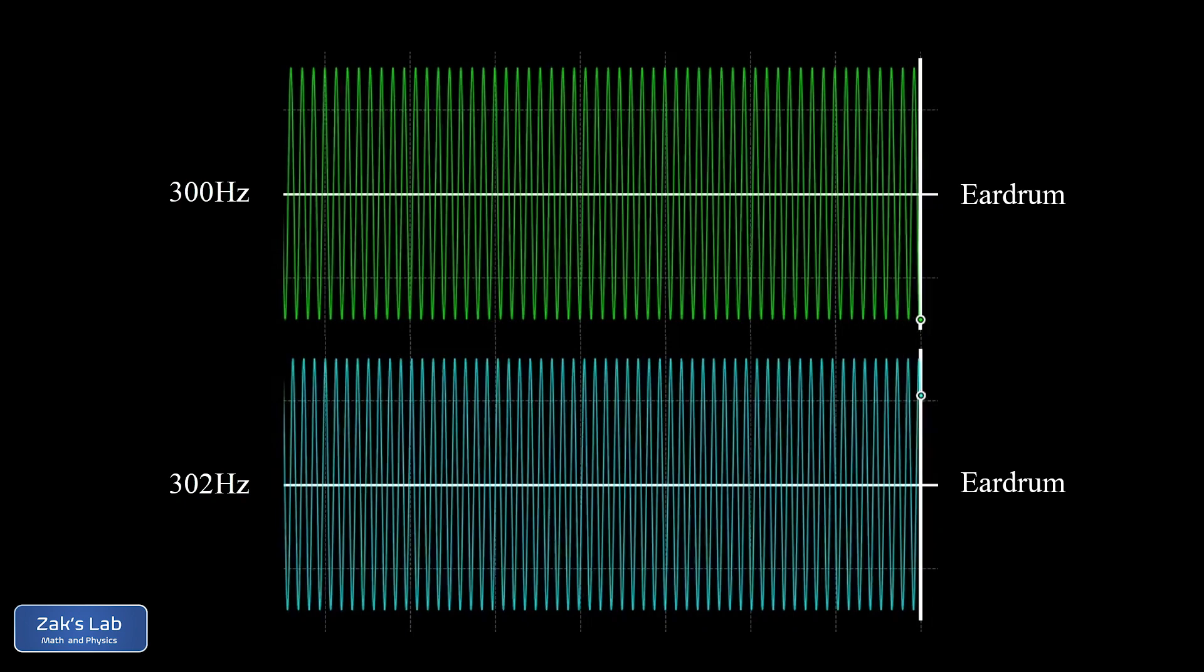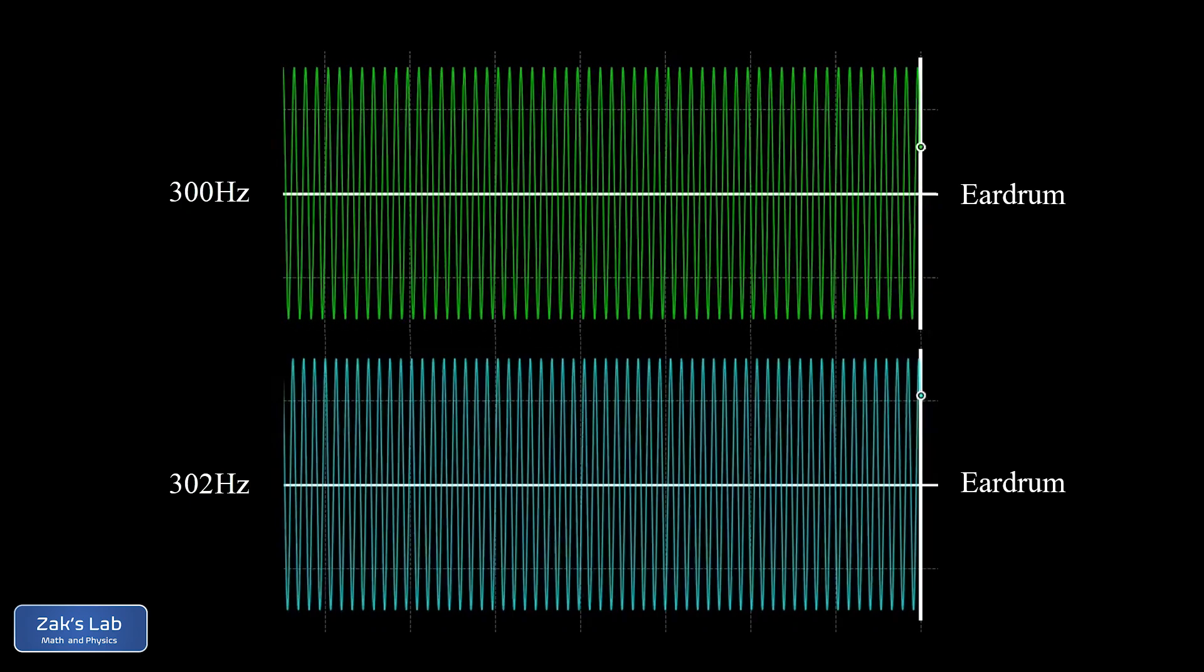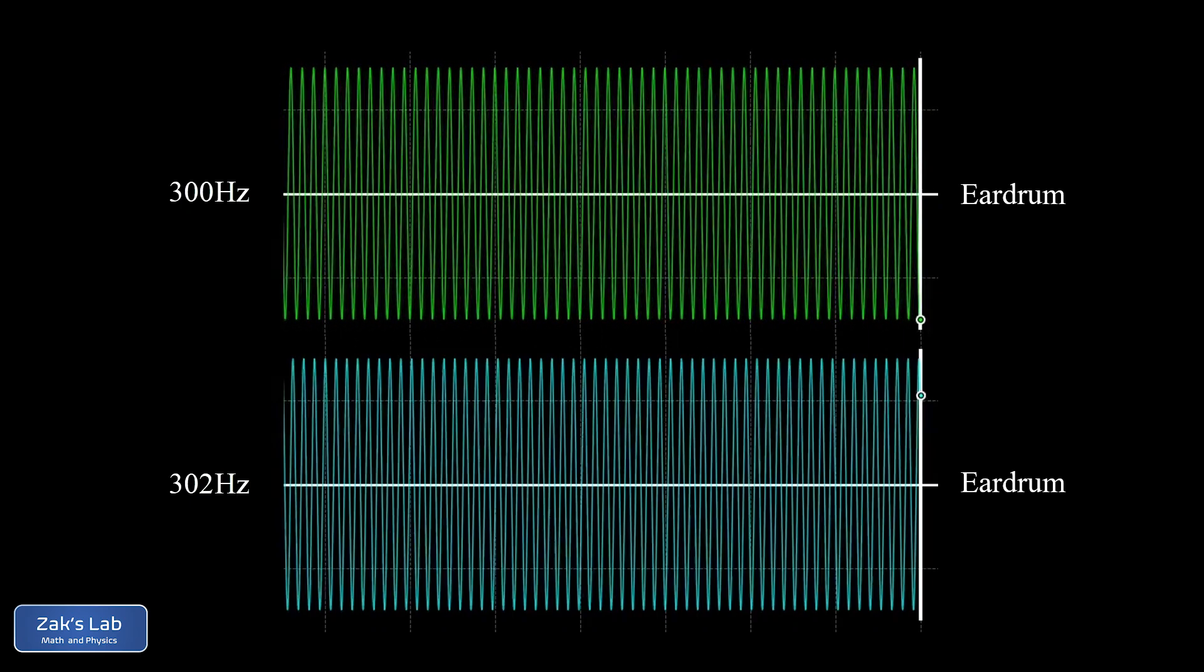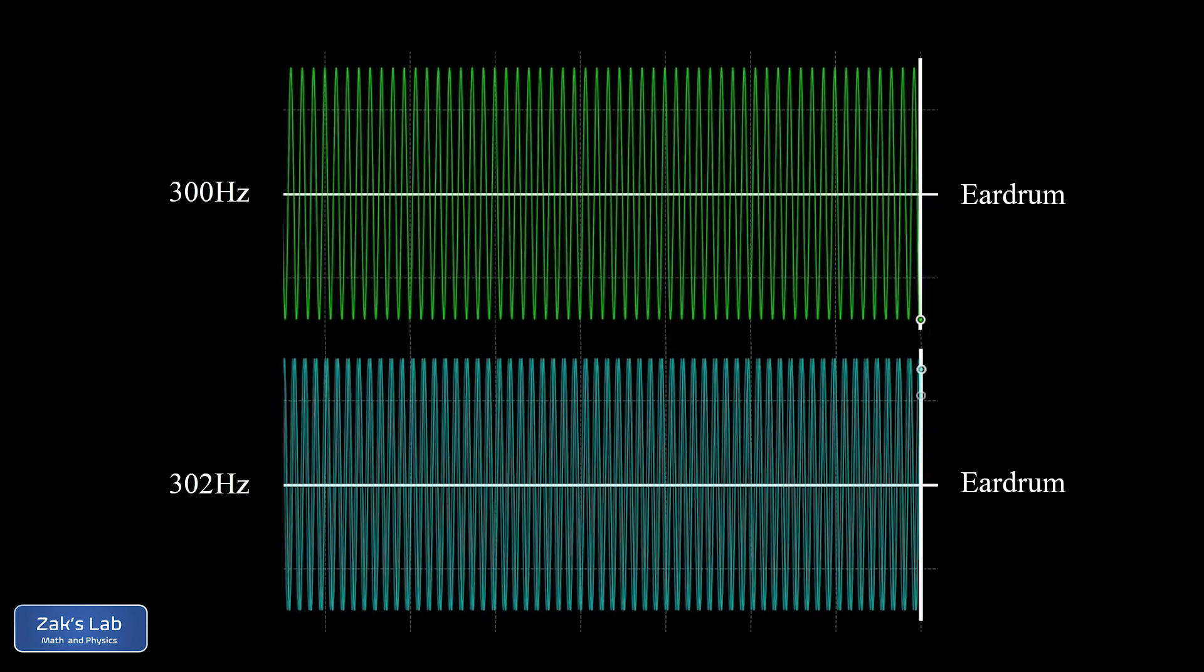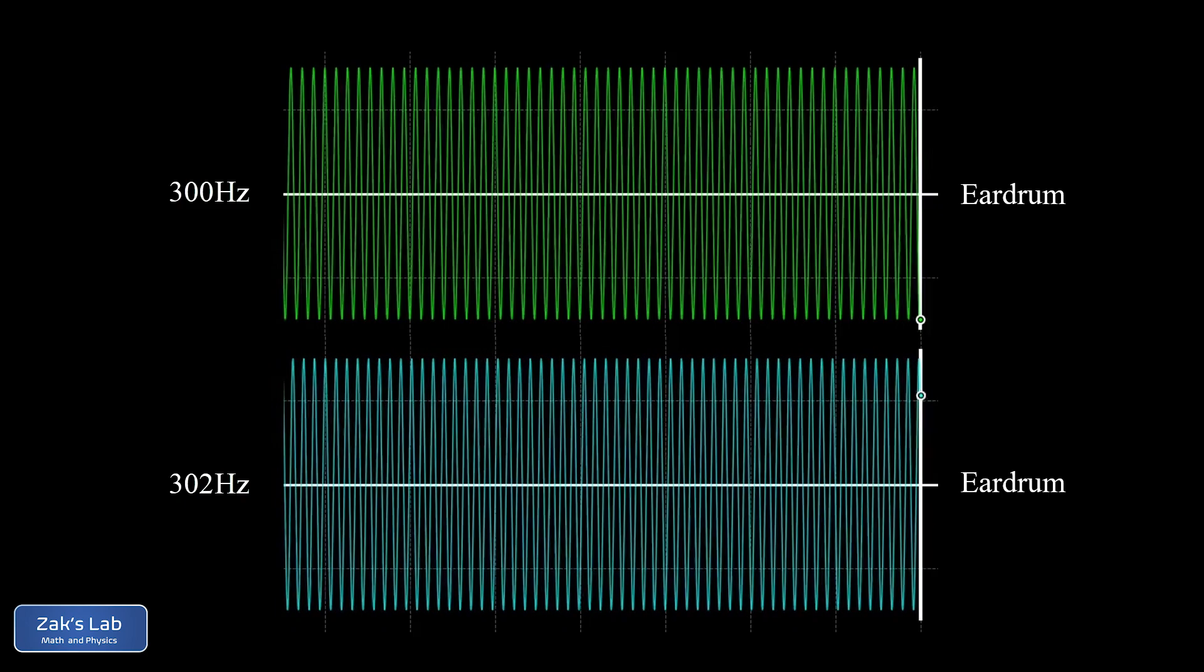Here's what the 300Hz tone sounds like as the pressure wave arrives at the ear. Now at the bottom we have our 302Hz sound wave moving to the right, and here's what that sounds like. Those frequencies are so close that I can't even hear the difference. But what happens when these two tones head toward your ear simultaneously?